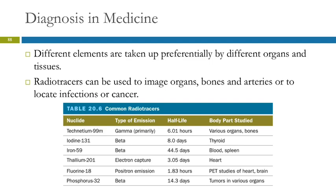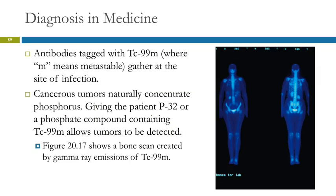This is a whole area of medicine that overlaps with chemistry. You can also tag antibodies — for example, with technetium-99M. The M means metastable. The antibodies gather at the site of an infection, so you can administer the tagged antibodies, wait a little bit, and then do a scan to see where the infection is.